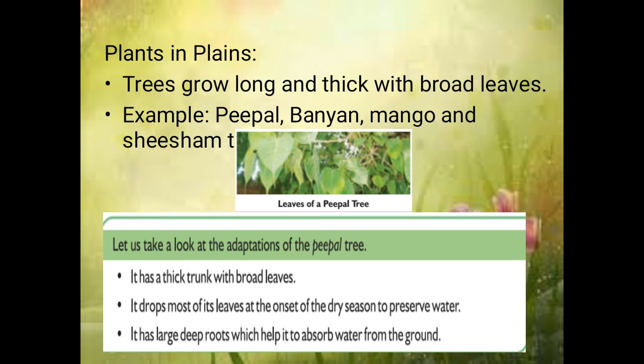Then plants in plains. Some of the plants are the peepal tree, banyan tree, and teak tree. They have thick trunks and broad leaves. Their roots go deep into the soil so they can absorb water easily. In such a way, the peepal tree can adapt to live in the plains.